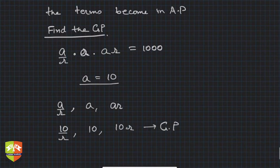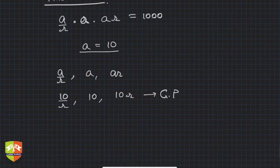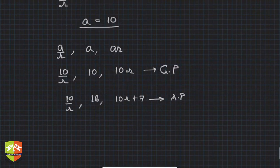Now they are saying add 6 to the second term, so 10 + 6 = 16, and add 7 to the third term, so 10r + 7. Along with the first term, they are now in AP. What is the criteria for AP? Consecutive terms will have common difference, so 16 - 10/r must equal 10r + 7 - 16.